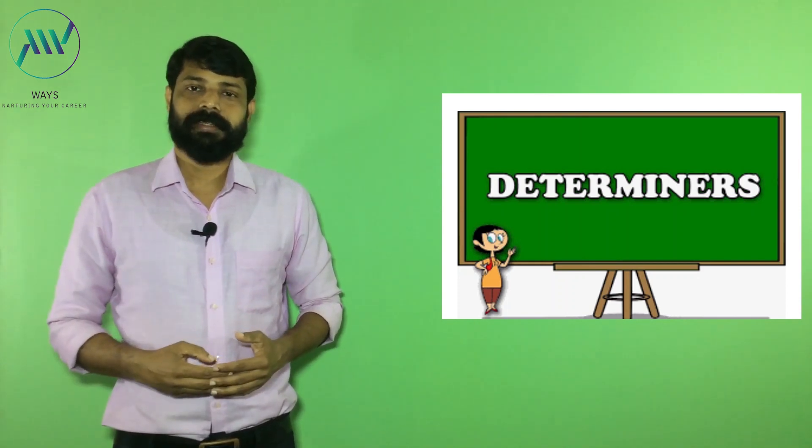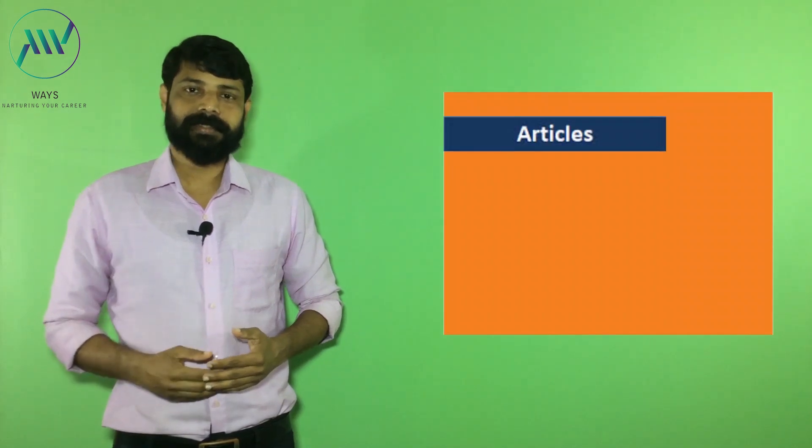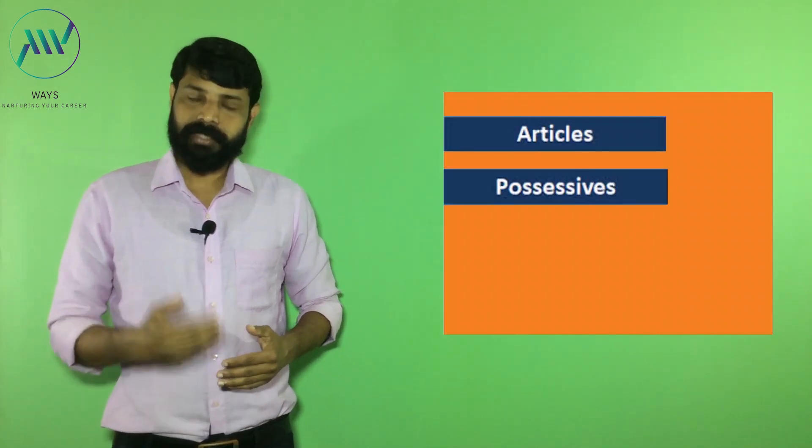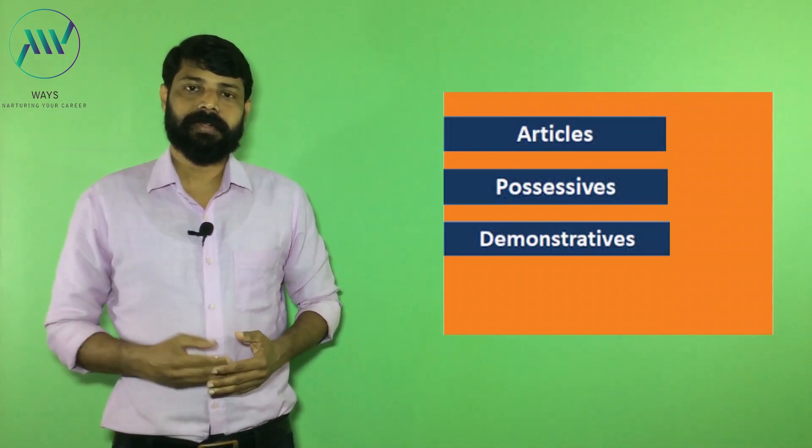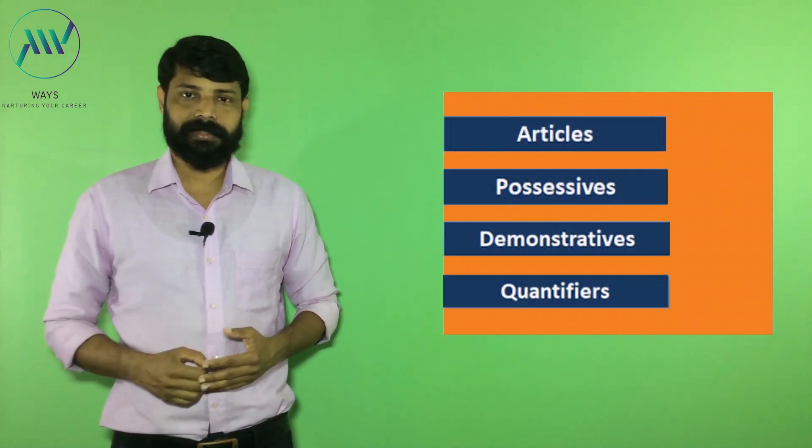Mainly, there are four types of determinants: articles, possessives, demonstrative, and quantifiers.